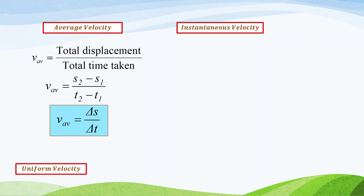Like the example just now about Winston's family, we can calculate the average velocity for the whole journey — for Winston's family to travel from his house to the museum, for a certain period of time.